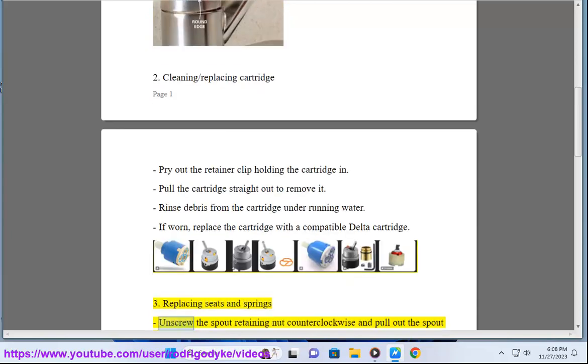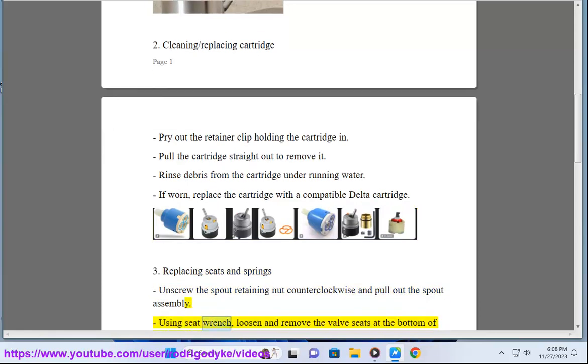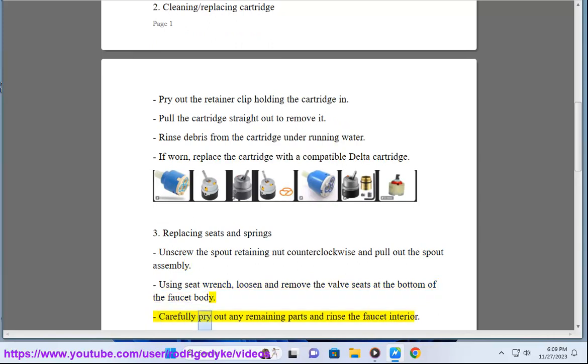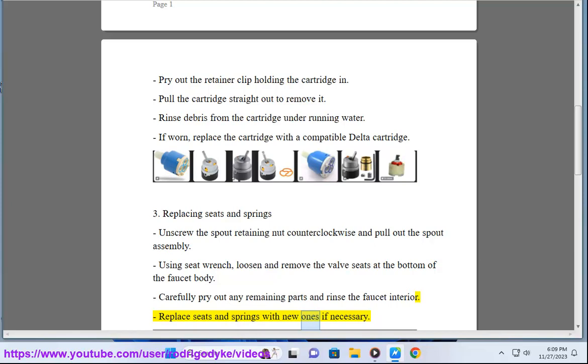Third, replacing seats and springs. Unscrew the spout retaining nut counterclockwise and pull out the spout assembly. Using a seat wrench, loosen and remove the valve seats at the bottom of the faucet body. Carefully pry out any remaining parts and rinse the faucet interior. Replace seats and springs with new ones if necessary.